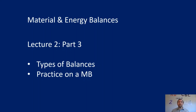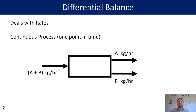One of the balances that you can do is something called a differential balance. That one deals with rates and is often used for continuous processes where you're looking at one point in time. So in this case I may have A and B going into my system and I'm looking at how much A and B are coming out of the system at that same time.